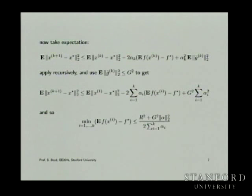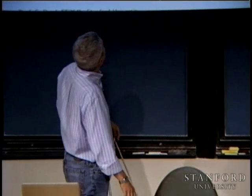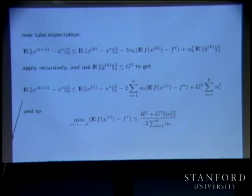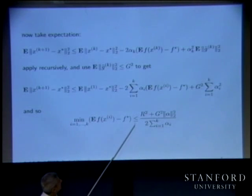You end up with: the expected distance to the optimal point in the next step is less than the current expected distance, minus 2*alpha_k times the expected suboptimality, plus alpha_k^2 times g^2. This is on our side with the linear-in-alpha term, while the bad guy is the alpha-squared term.